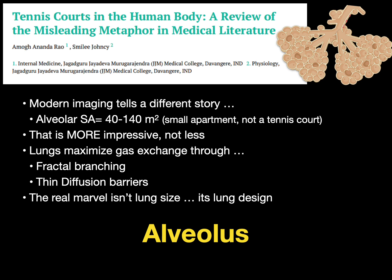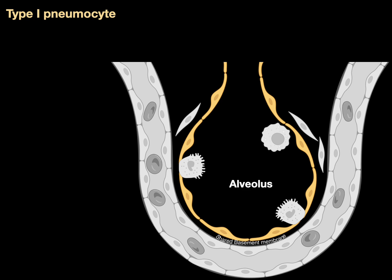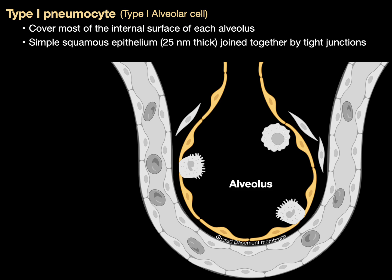That design is through the alveolus and the cells lining it, beginning with type 1 pneumocytes. Pneumo means air, cyte means cell — also called type 1 alveolar cells. They cover most of the internal surface area of each alveolus. They're thin cells, simple squamous epithelium, 25 nanometers thick.